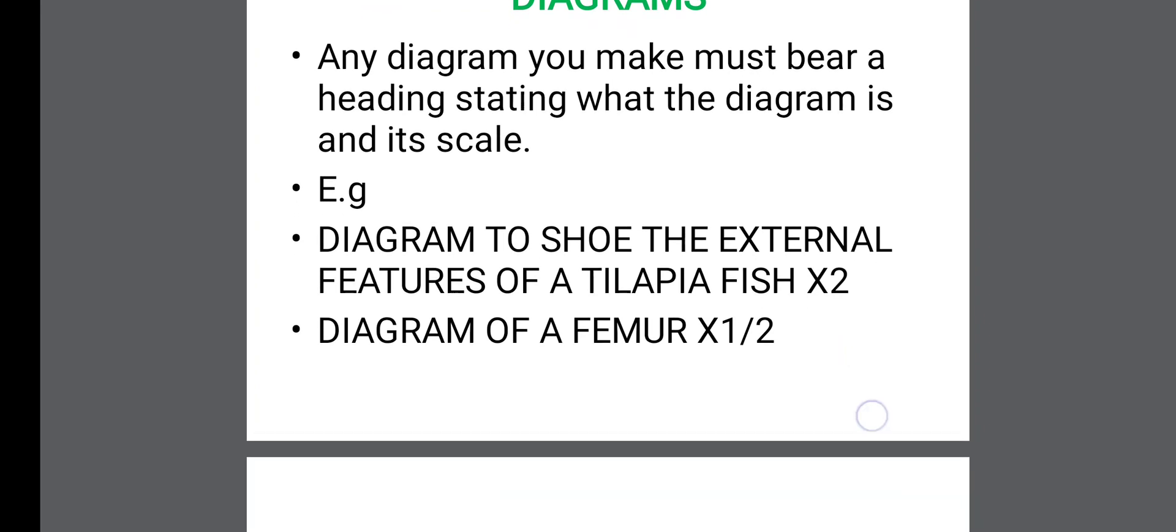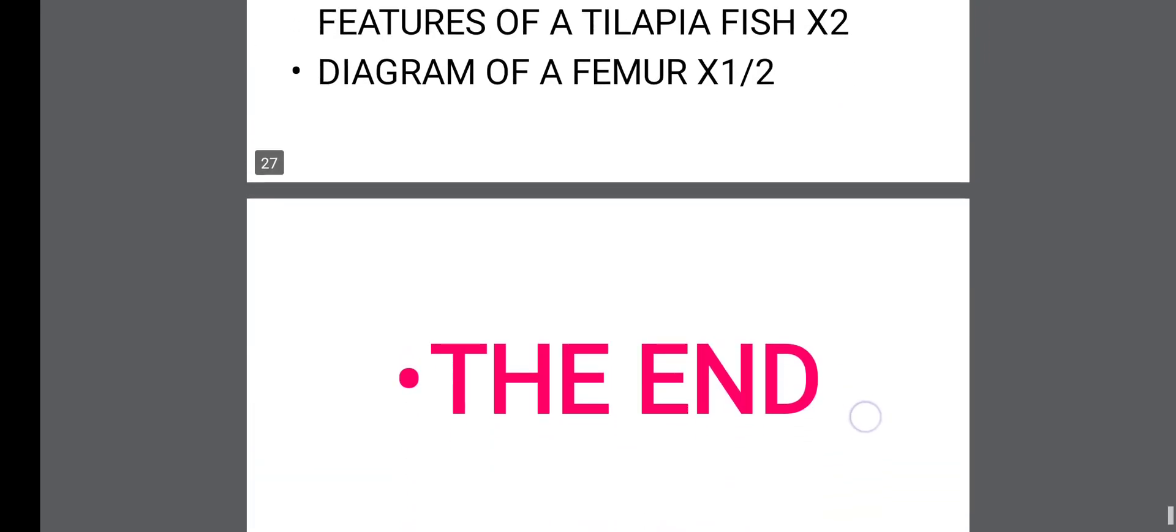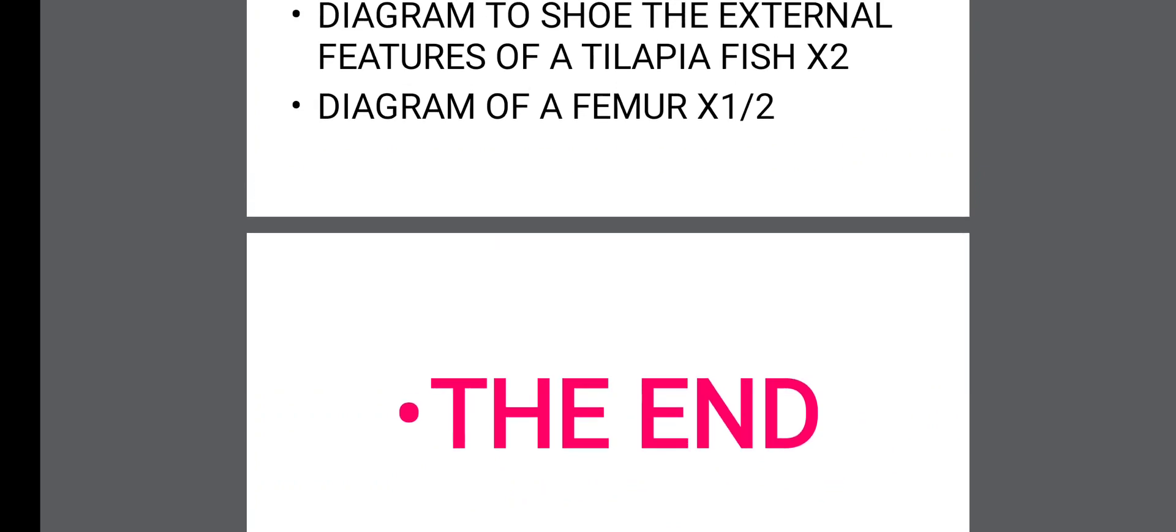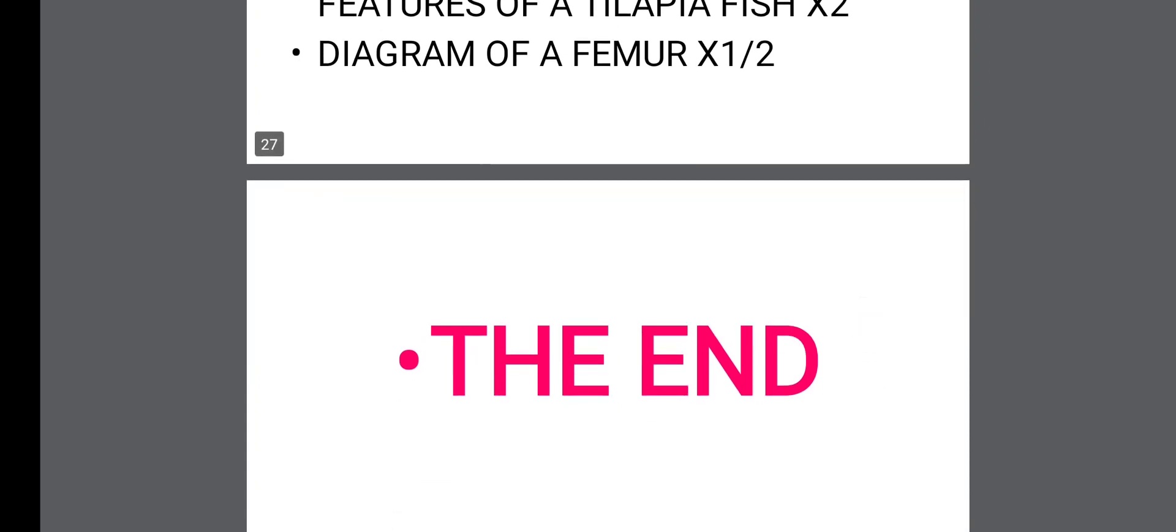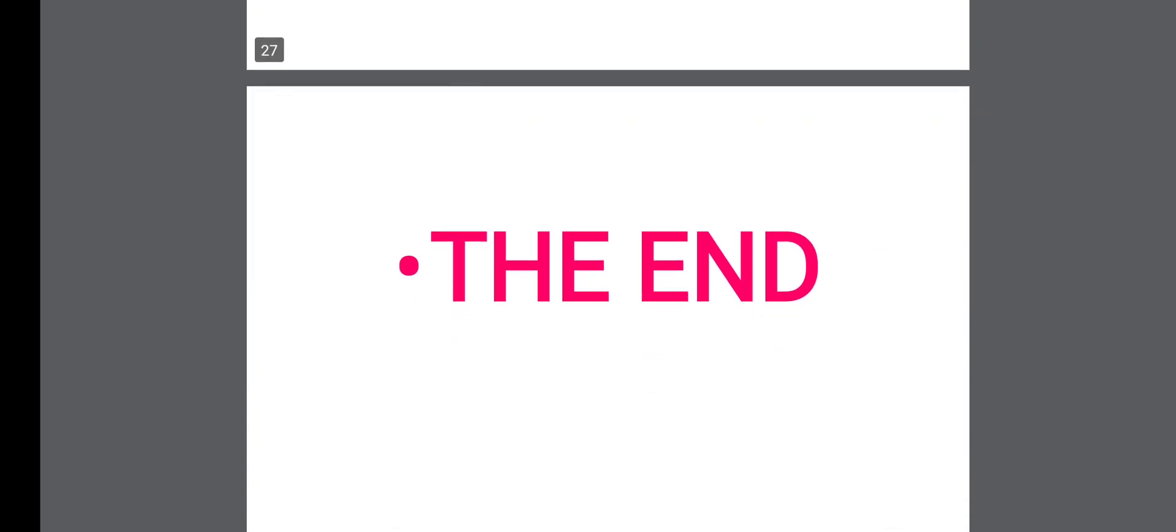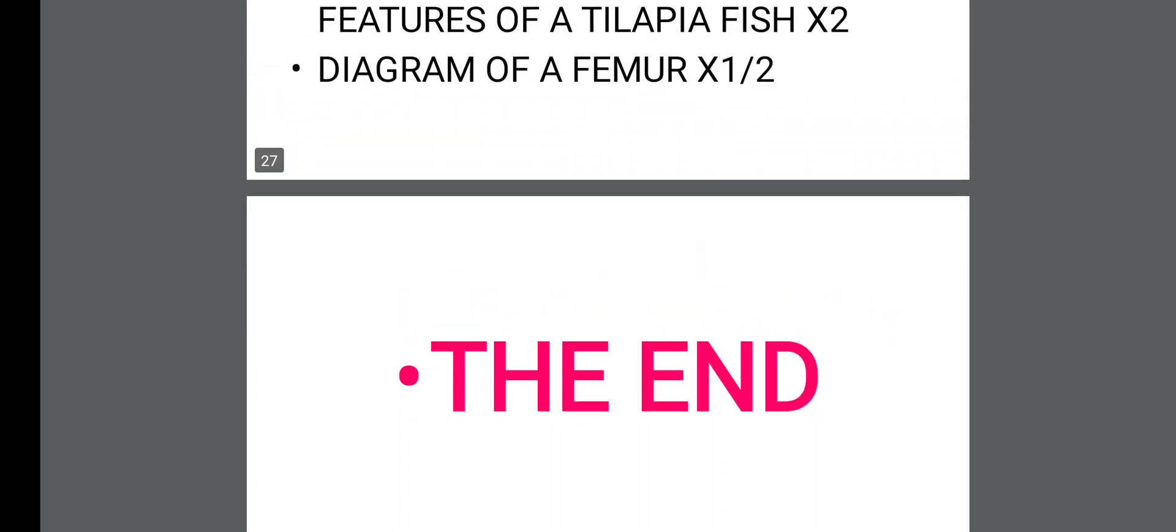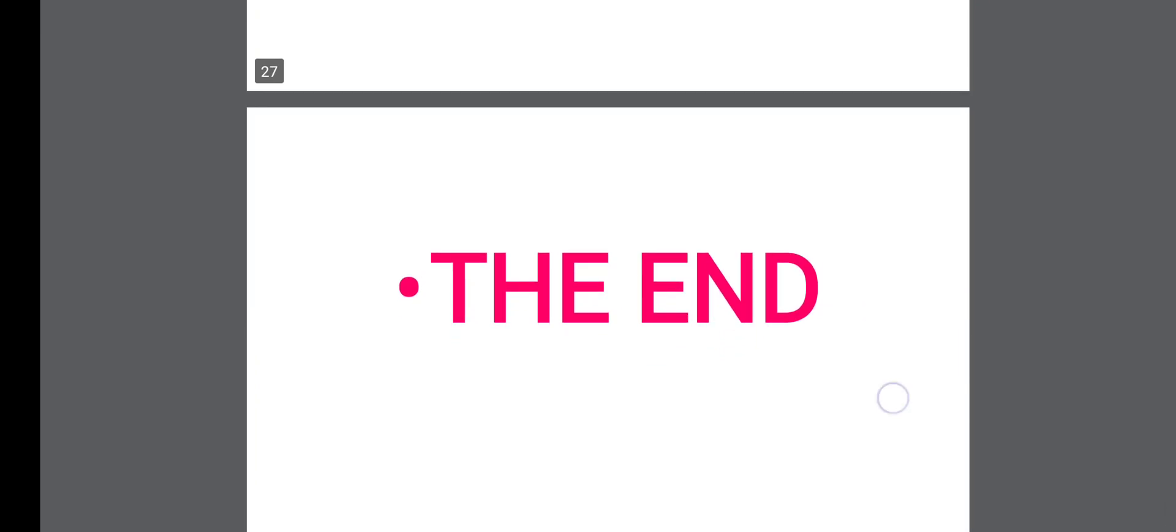Example: the diagram to show the external features of a tilapia fish. You write magnification beside it like you can see times 2. Just an example. Diagram of a femur times half. And what you should also know is that if any magnification is less than 1, don't identify it with decimals. Let it remain in fraction.